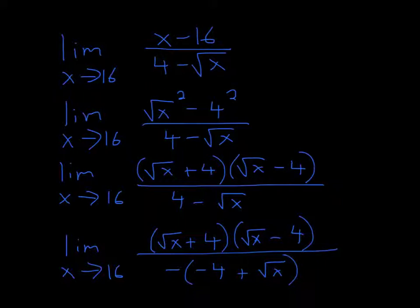So you can rewrite it and put square root of x squared. Because if you square a square root, they both cancel, and then you'll be left with x. And here, you can rewrite it as 4 squared, because 4 squared is 16.